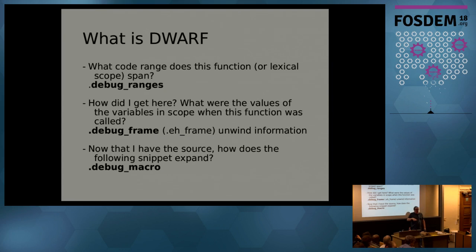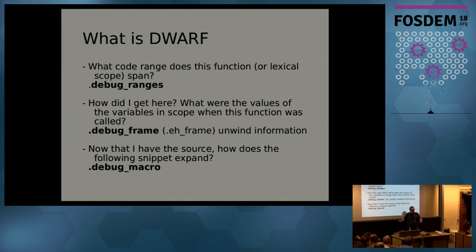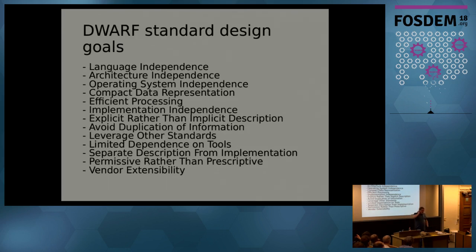DWARF even provides — although most compilers don't emit directly — macros, so that if you know the source and you want to copy-paste it, you can use the macros to expand all the defines in your code. That's a lot of things, and DWARF has a lot of design goals, probably a bit too many, because they conflict with each other, of course.